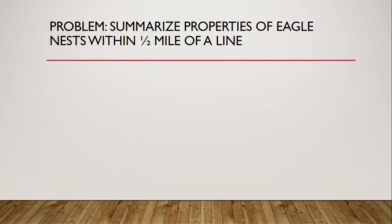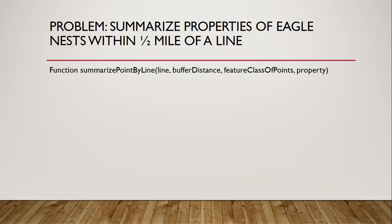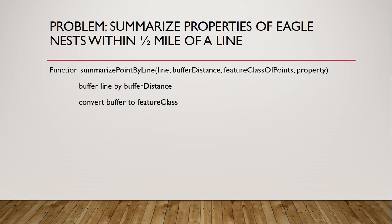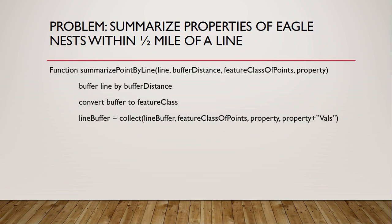The wrapper function will take as inputs: a line, a buffer distance, a point feature class, and the name of a property in that point feature class. The pseudocode looks like this: first we declare the function and its parameters, next we buffer the line by the specified distance, then we convert the buffer — which is a single geometry — to a feature class so we can use it in collect, next we call the collect method itself to create an array of properties in the line buffer feature, and finally we return the buffered line. We'll be able to use this summarize point by line function for raptor nests as well, which is one reason why we're making it very general.